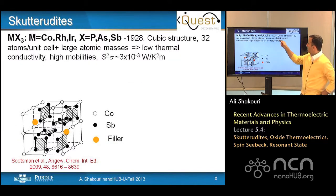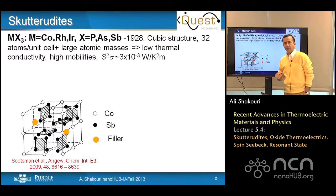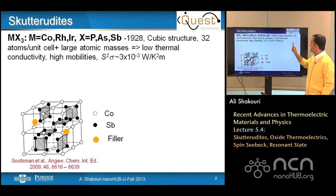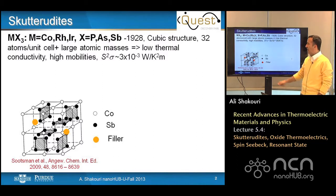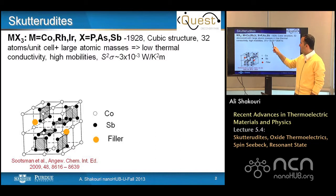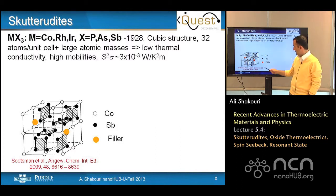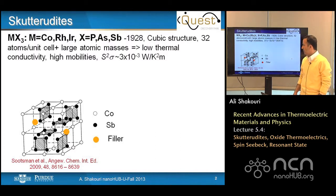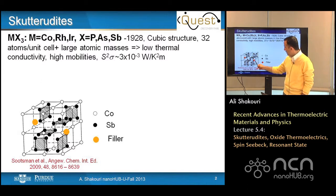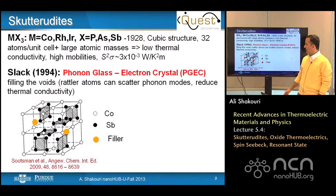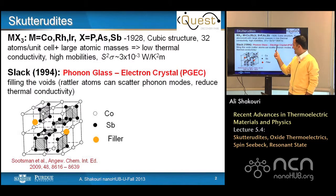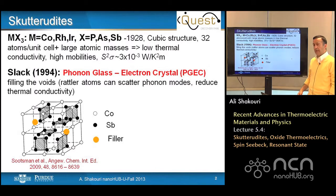The skutterudites were discovered in 1929 — named after a city in Norway. They have a cubic structure with 32 atoms per unit cell, large atomic masses giving low thermal conductivity. They have relatively high mobilities with a good power factor. This is an example of cobalt antimonide skutterudites, which have two empty sites for filler atoms.